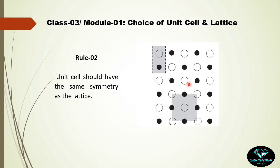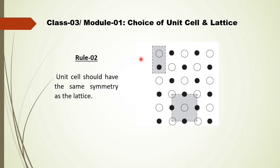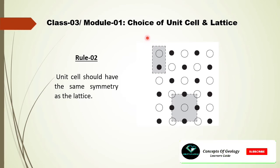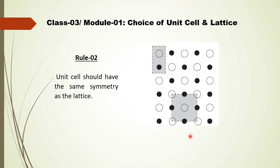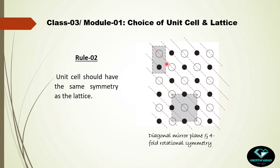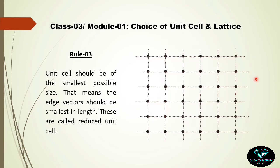Additional symmetry in the square grid includes mirror planes passing through the diagonals. For two candidate unit cells, one lacks the four-fold rotational symmetry and the diagonal mirror plane, while the other possesses both. So the second unit cell is the best choice according to Rule 2.